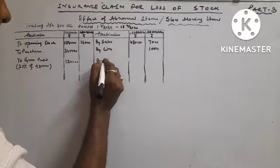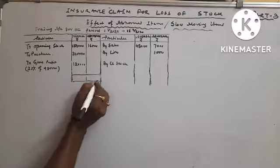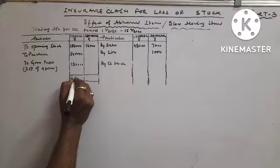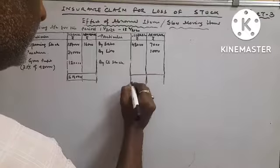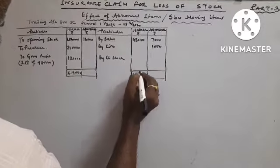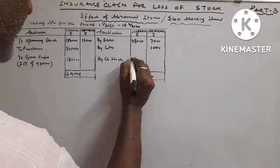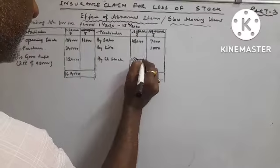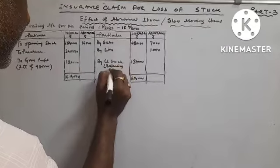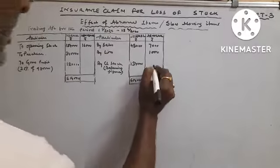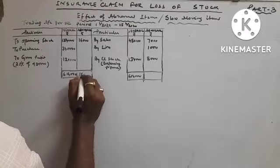By closing stock, close the book. Total coming 6,14,000. So closing stock of normal item will be 1,34,000. This is balancing figure. Closing stock of abnormal item 8,000 total 16,000.